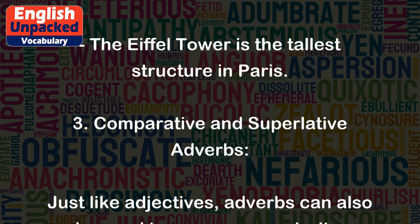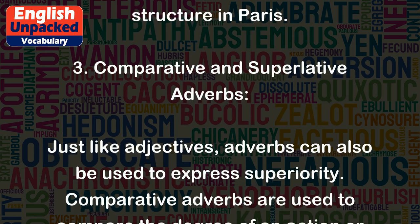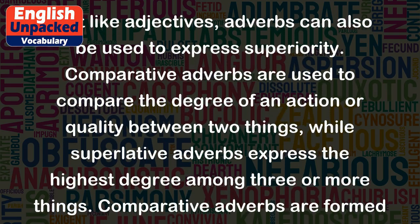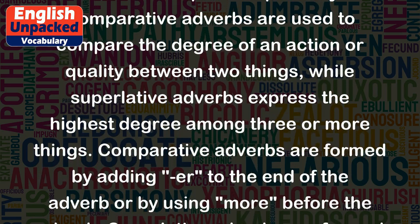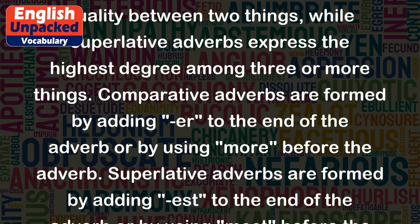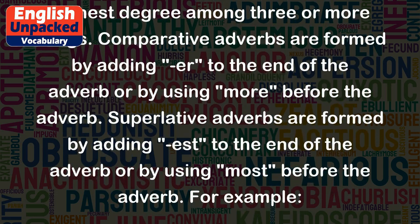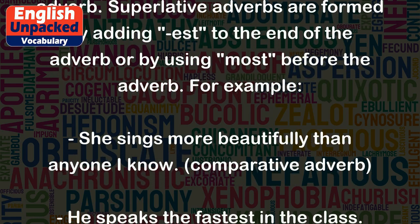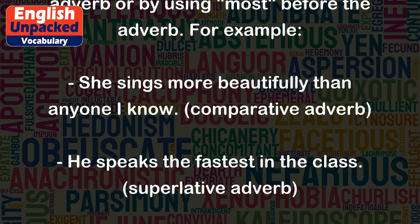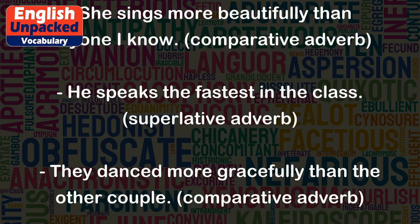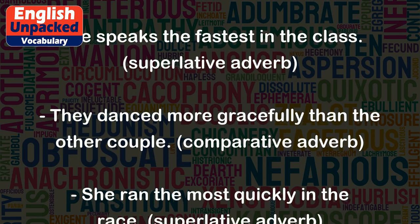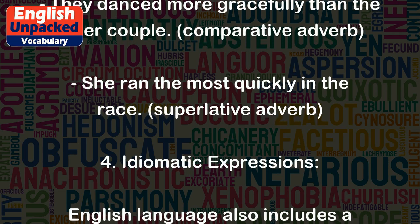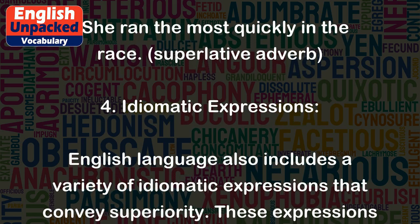3. Comparative and Superlative Adverbs. Just like adjectives, adverbs can also be used to express superiority. Comparative adverbs are used to compare the degree of an action or quality between two things, while superlative adverbs express the highest degree among three or more things. Comparative adverbs are formed by adding -er to the end of the adverb or by using 'more' before the adverb. For example: She sings more beautifully than anyone I know (comparative adverb). He speaks the fastest in the class (superlative adverb). They danced more gracefully than the other couple (comparative adverb). She ran the most quickly in the race (superlative adverb).